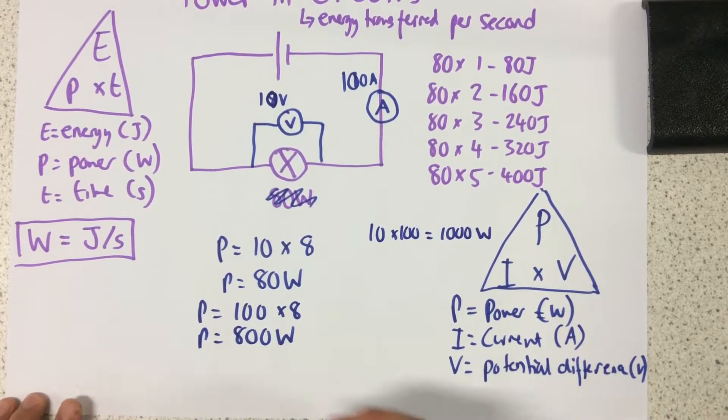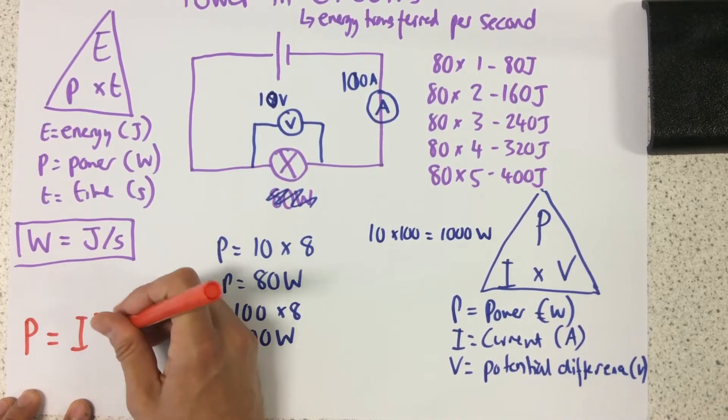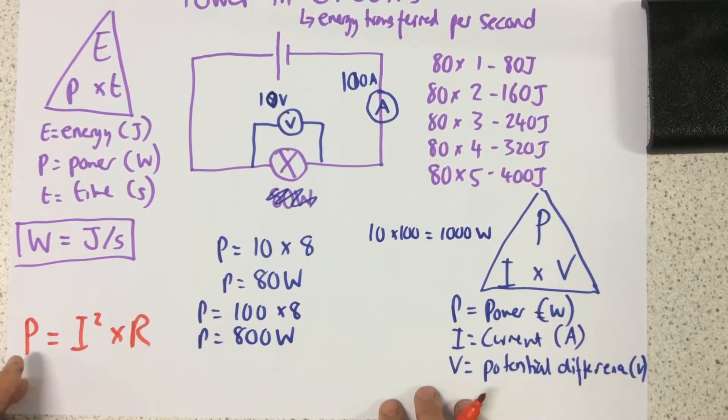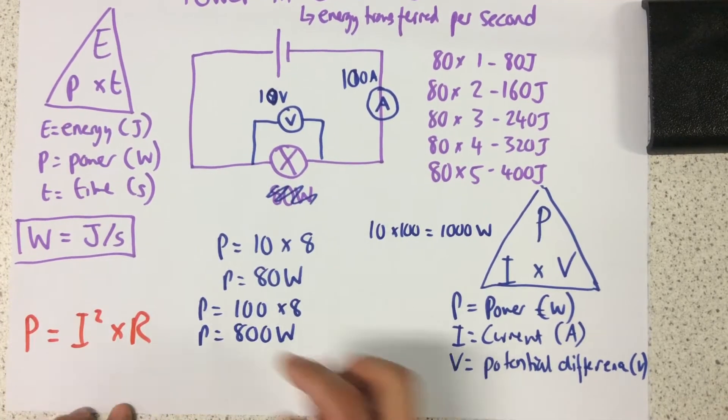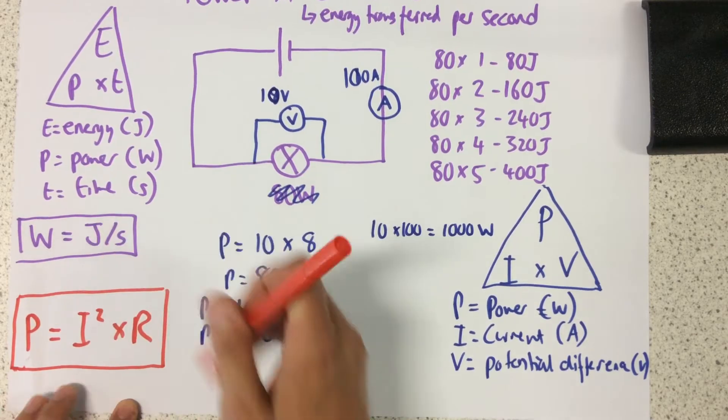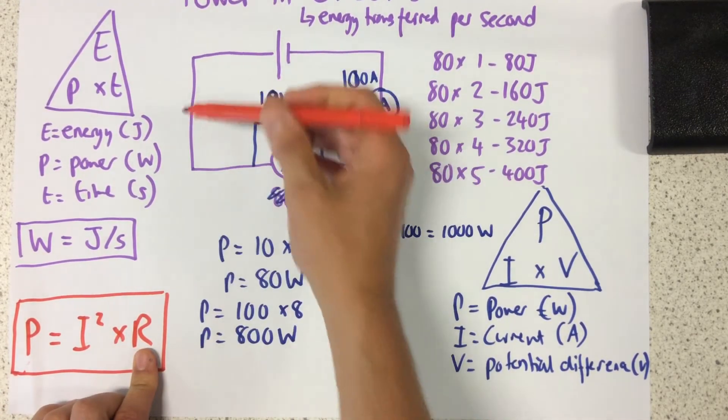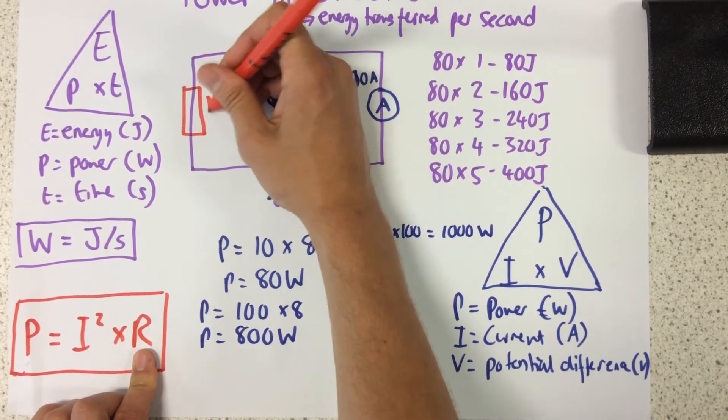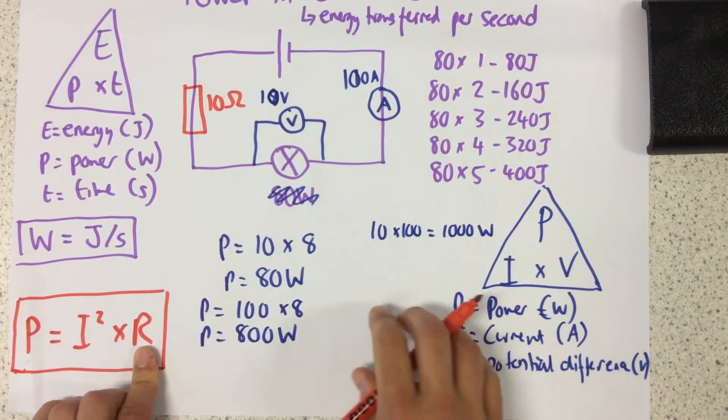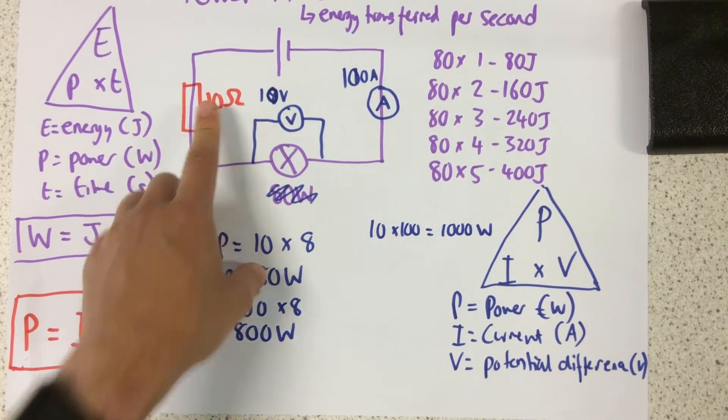Now the final equation we need to know is P equals I squared times R, which simply means power equals your current squared times your resistance. So in order to do this, all you need to do is find the current in your circuit, figure out the resistance. So for example, if there's a resistor in there that is 10 ohms, then all you need to do is do your current squared multiplied by your resistance.